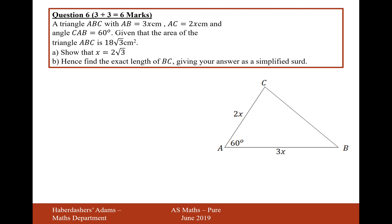Triangle ABC with AB equals 3x centimeters and AC equals 2x centimeters and angle CAB is 60 degrees. Given that the area of triangle ABC is 18 root 3 centimeters squared, show that x equals 2 root 3.